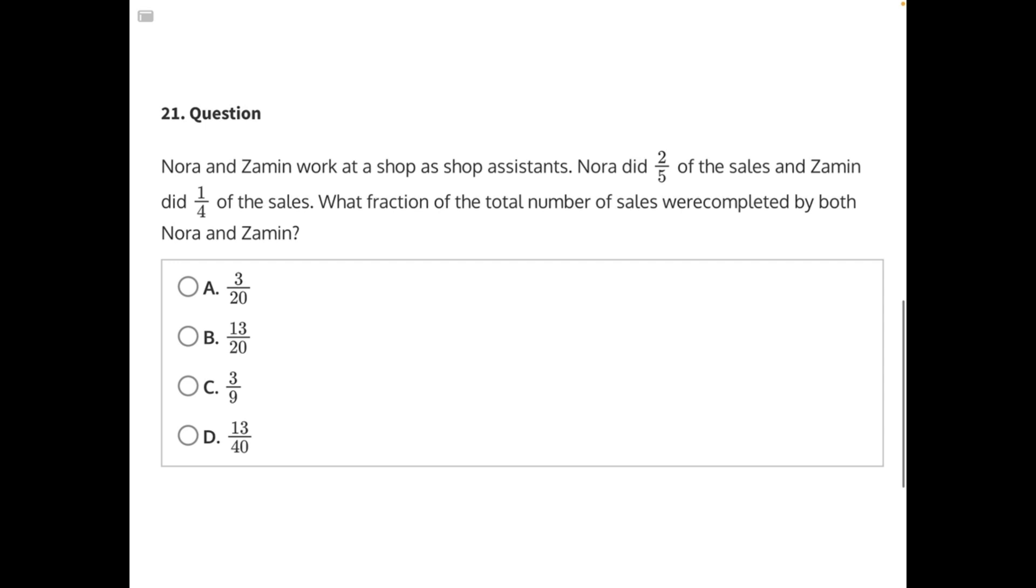The question is asking us to find the total number of both of their sales, so we need to combine both of their sales or add them together. To add these two fractions, we'll need common denominators, and let's find those common denominators by just multiplying each fraction by the other's denominator. I'll show you what I mean.